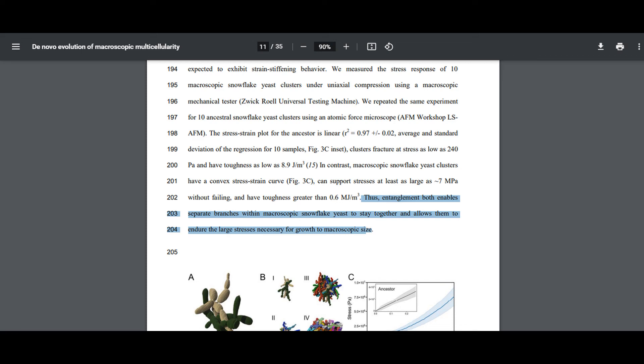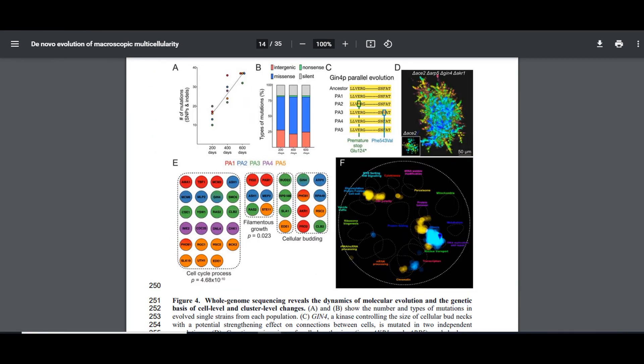The researchers then did something really interesting. They sequenced the genomes of the anaerobic strains. The researchers found that the ratio of non-synonymous to synonymous mutations was greater than one in four of the five populations, indicating that adaptive evolution had occurred. Genes known to affect cell cycle progression, filamentous growth, and bud scar size were mutated in the five populations, demonstrating parallel evolution. Simple mutations in a few key genes allowed the yeast to reach much greater sizes than their unicellular ancestors.